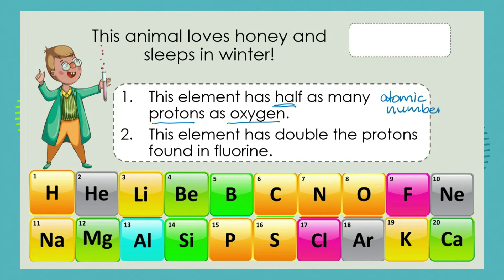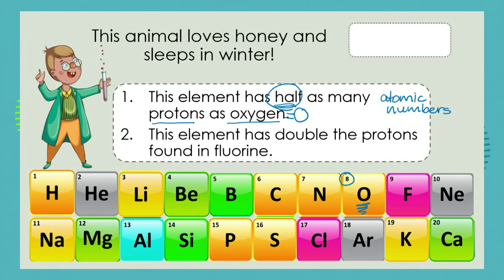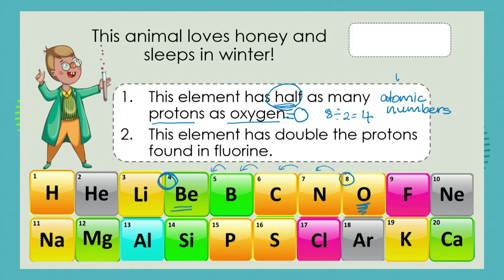So if we go to oxygen — and there was the challenge, you had to know that oxygen has the symbol O — we see the atomic number is 8, which means oxygen has 8 protons. Half as many protons as oxygen is 8 divided by 2, which equals 4. So let's go back along the periodic table and we get to atomic number 4, which is the element with the symbol Be — beryllium. Say it with me: beryllium!